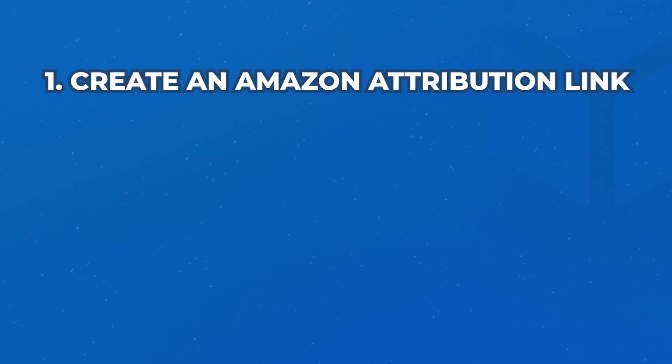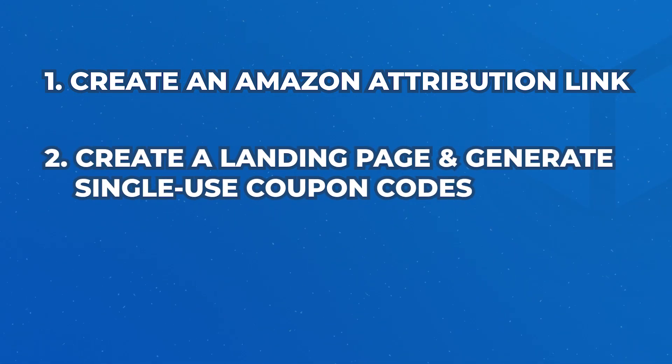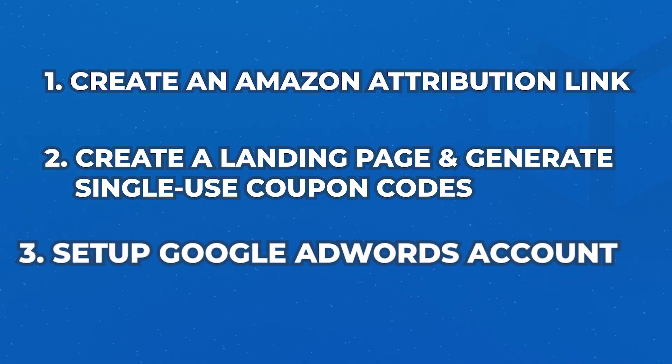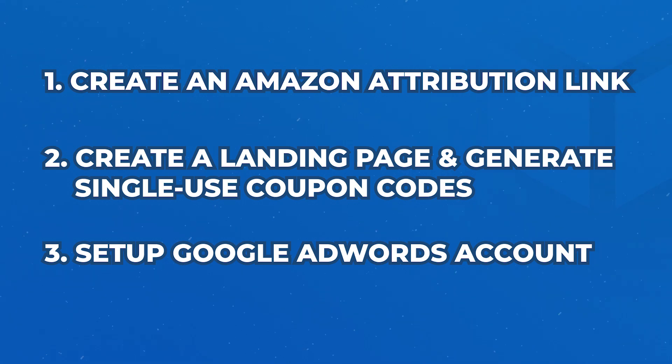So the steps are as follows. Number one, we are going to create an Amazon Attribution link. Number two, we're going to create a landing page and also create a bunch of single-use codes as a lead magnet to be able to get an email from our traffic. And number three, we're going to set up the Google AdWords account to basically bring the off-Amazon traffic to our landing page.